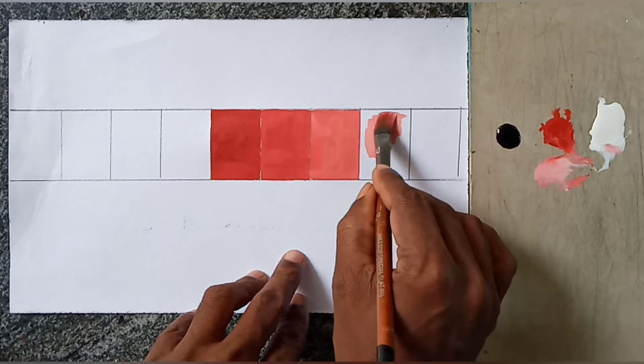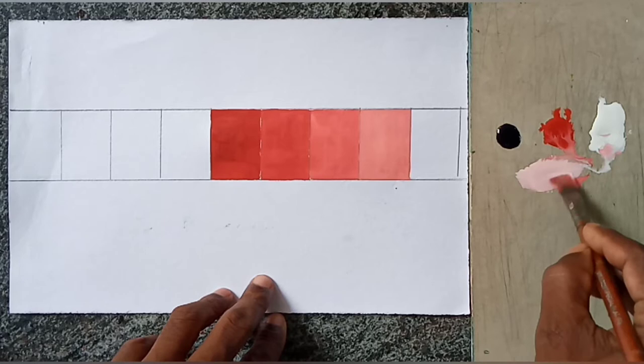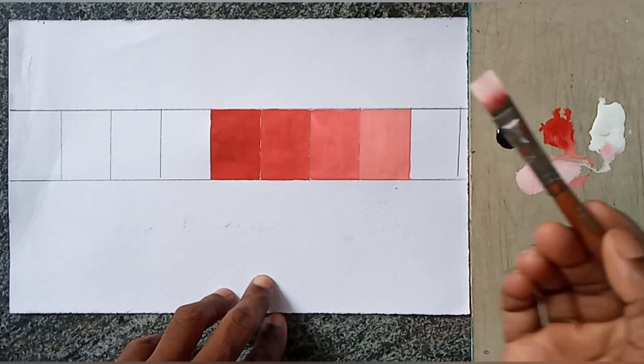Now want to shade another shade. So like that, step by step, you want to increase that white color. Now last step, you want to add more white.